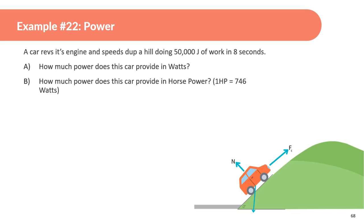A car revs its engine and speeds up a hill, doing 50,000 joules of work in 8 seconds. A, how much power does this car provide in watts? B, how much power does this car provide in horsepower?